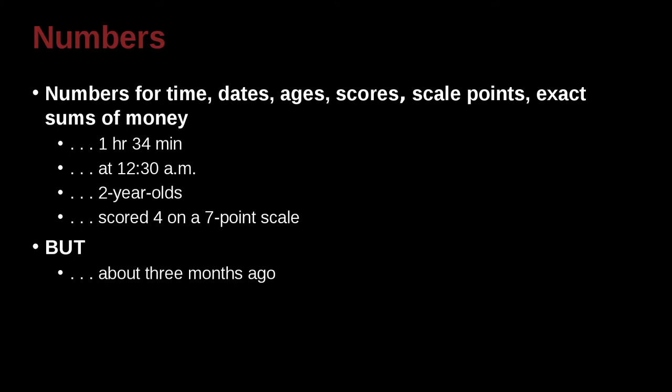But you need to be careful and remember that if you're going to write something like about three months ago, that's not an exact time. So you would then, if it's less than 10, you would spell out the word, spell out the number. Started about two days ago. Again, this is not an exact time. This is about time. So in that case, if it's less than 10, you need to write it out. You need to spell it out.